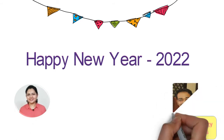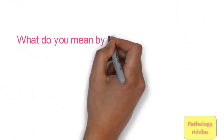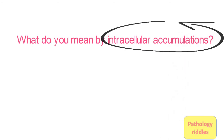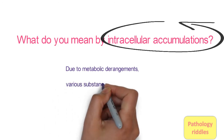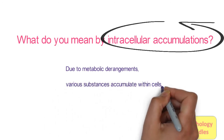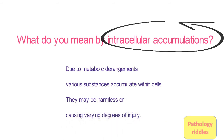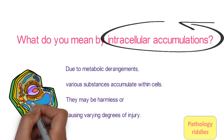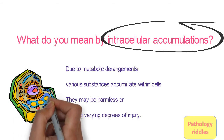It is in a question and answer format. Question 1: What do you mean by intracellular accumulation? The answer is: due to metabolic derangement, various substances accumulate within the cell. These substances may either be harmless or may cause varying degrees of injury. They can be endogenous or exogenous — these are lipids, proteins, glycogen, etc.